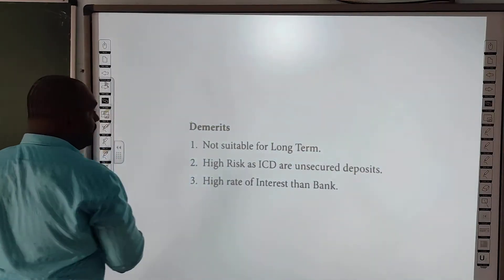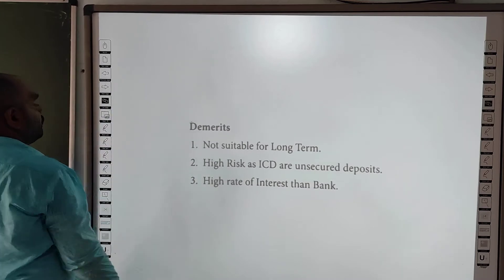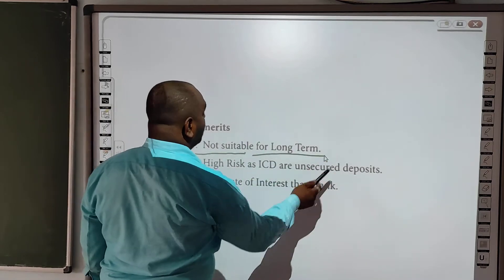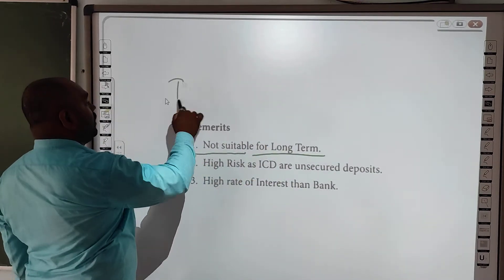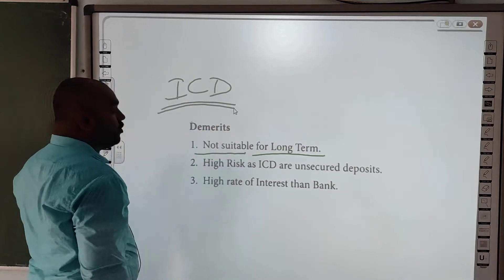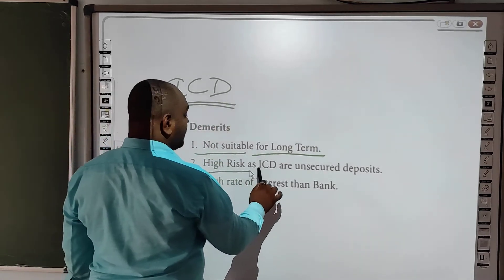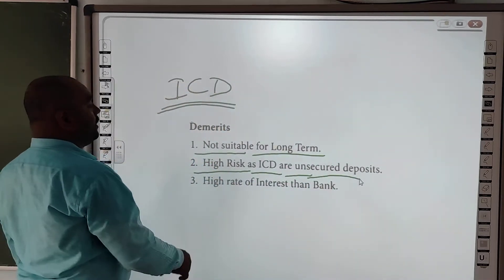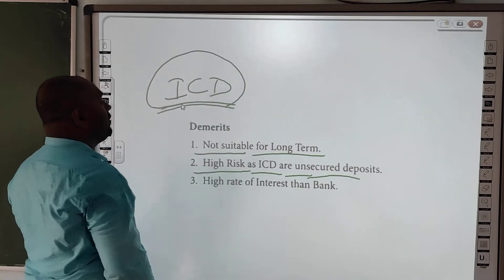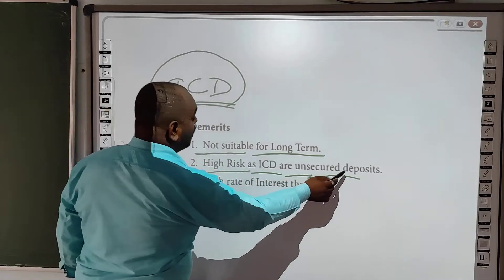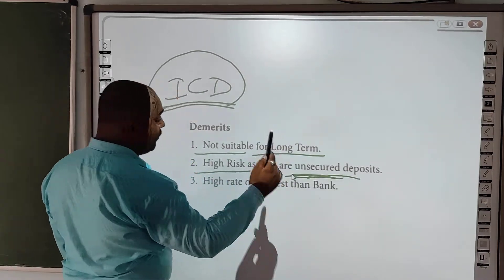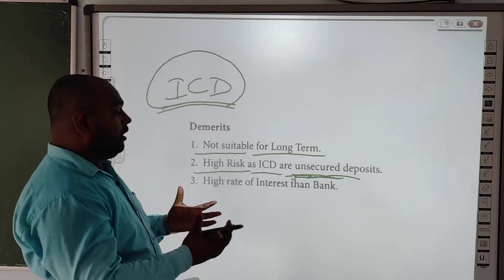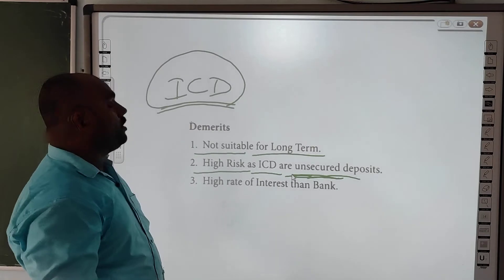Demerits ki situation ki baat karte hain: do not suitable for the long term — yeh long-term ke liye suitable nahi hota. Is tarah ke agar paise mein deposit hoti hai, toh usme high risk hota hai, kyonki yeh unsecured hota hai. Iske against koi assets nahi rakhe jaate — koi land ho, machinery ho, uske against hum isko generate nahi karte.